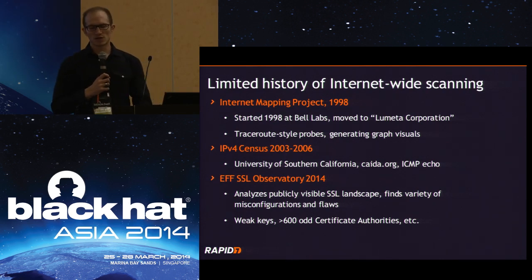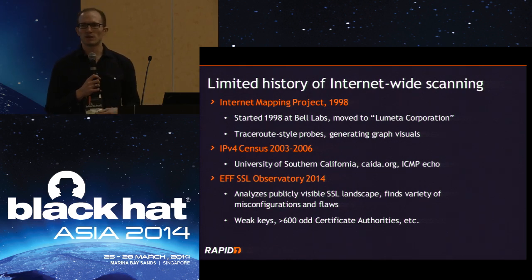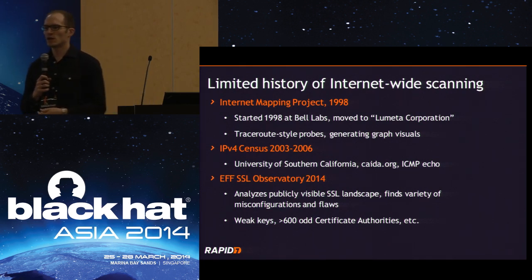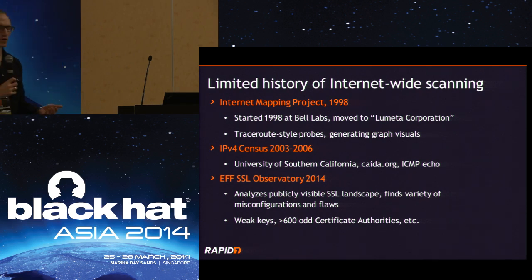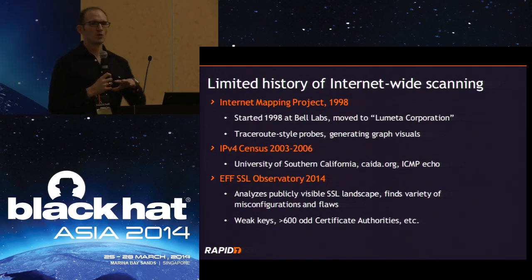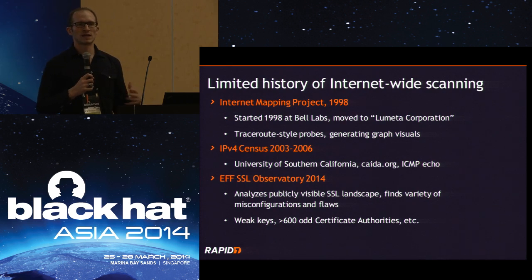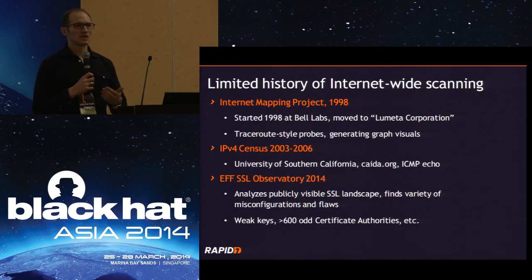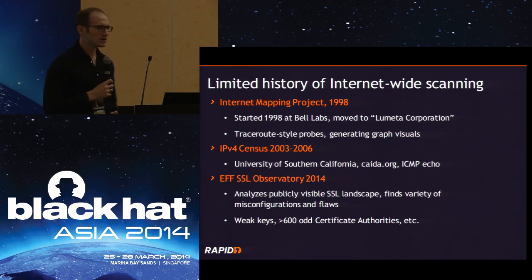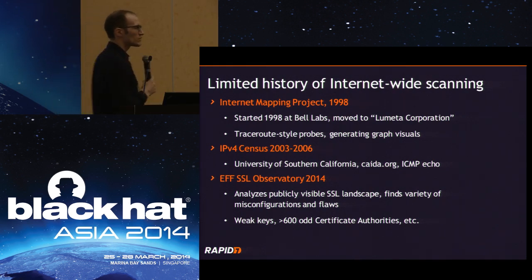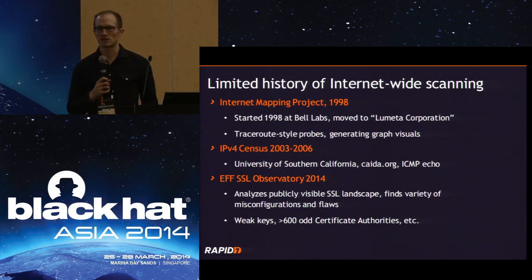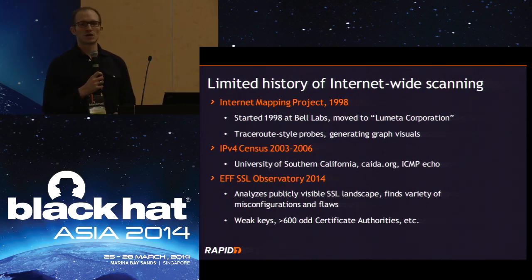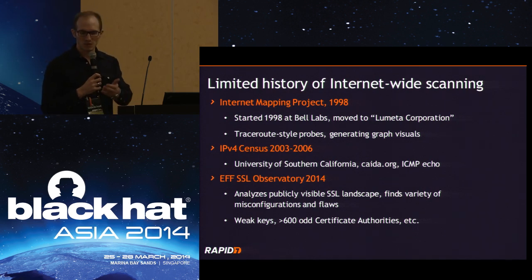The EFF SSL Observatory tried to go out and grab every certificate on HTTPS secure web servers, and look at what the landscape looks like: what CAs sign those certificates, what key sizes people use, what things can we find. They published information about several different flaws — for example, hundreds of certificate authorities in our browsers have never signed a single certificate seen on the public internet.